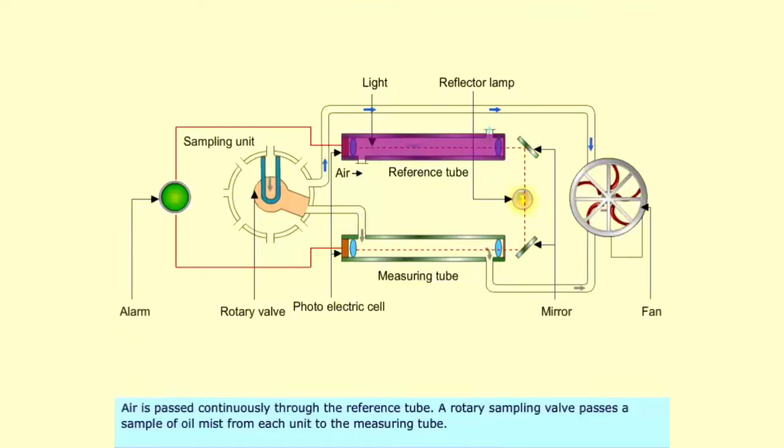Air is passed continuously through the reference tube. A rotary sampling valve passes a sample of oil mist from each unit to the measuring tube.